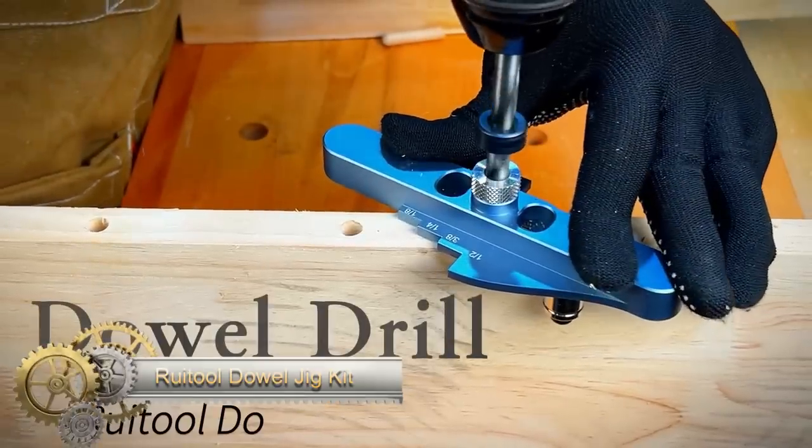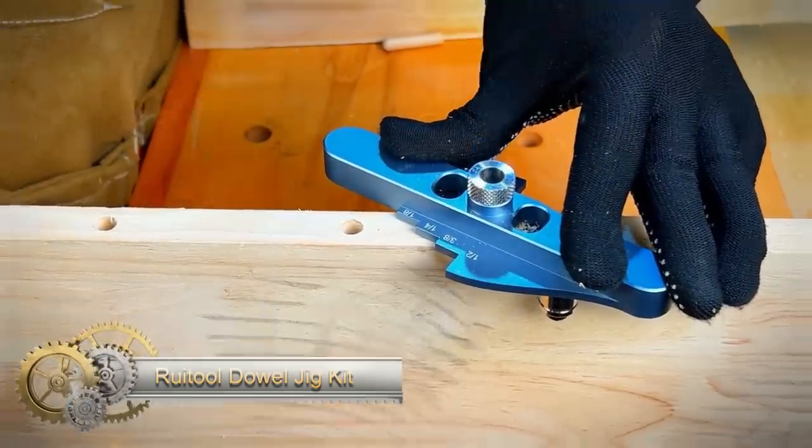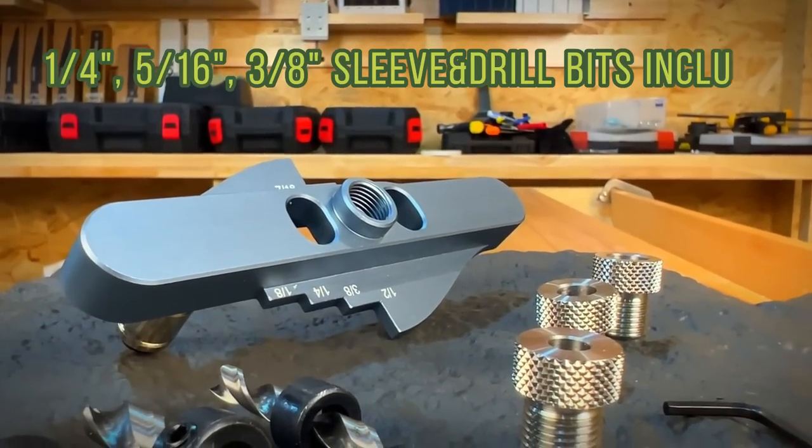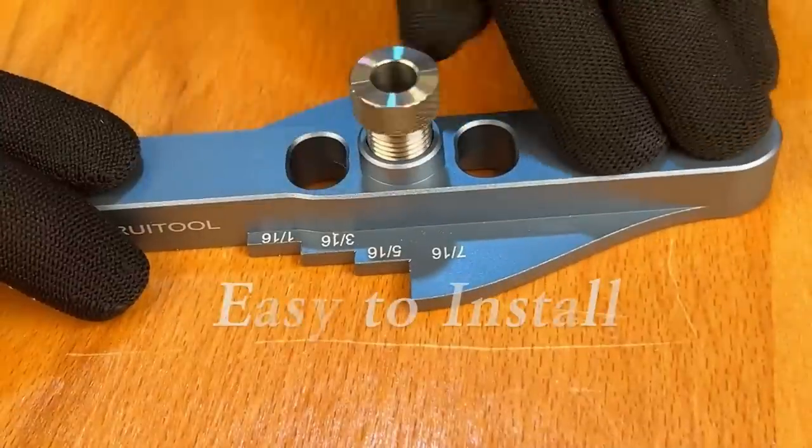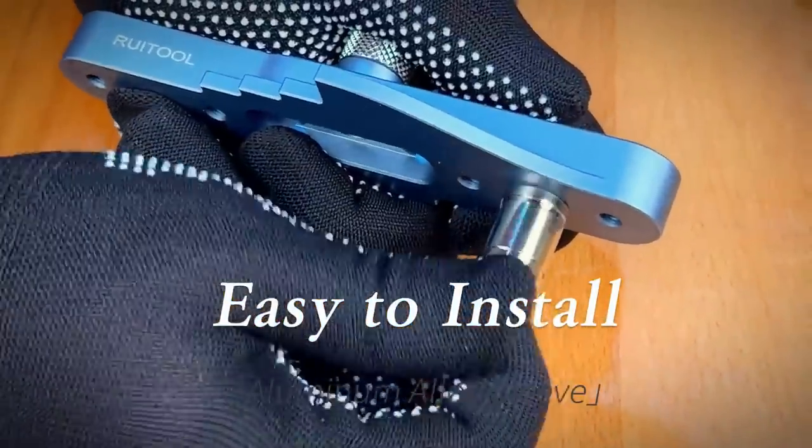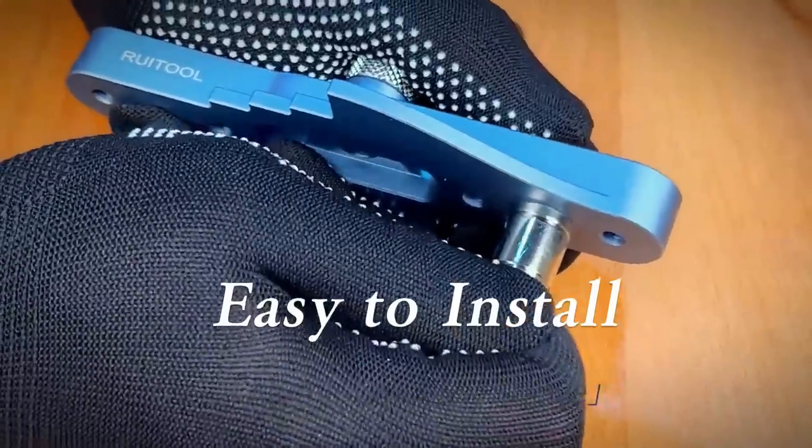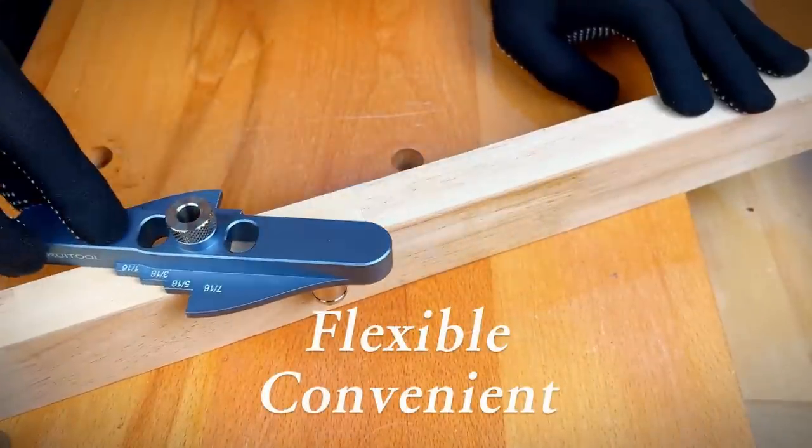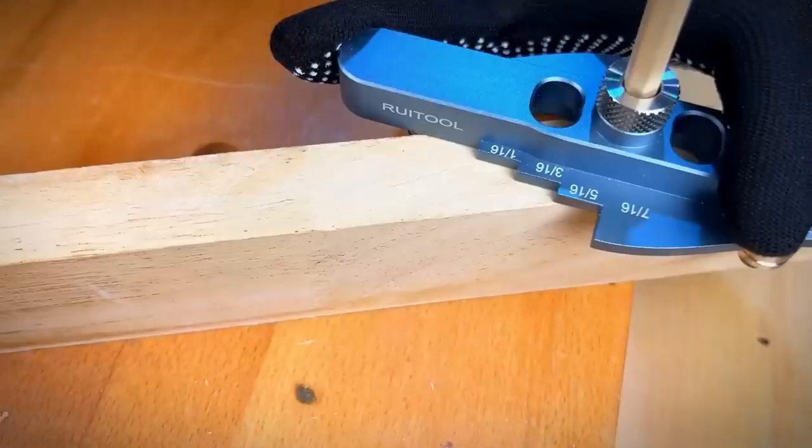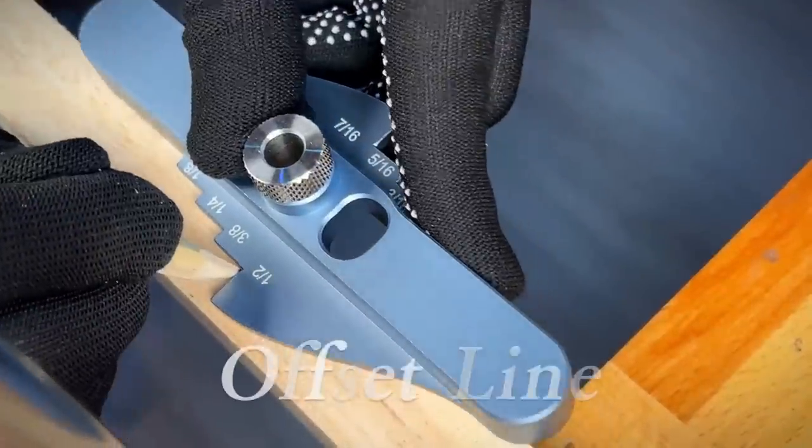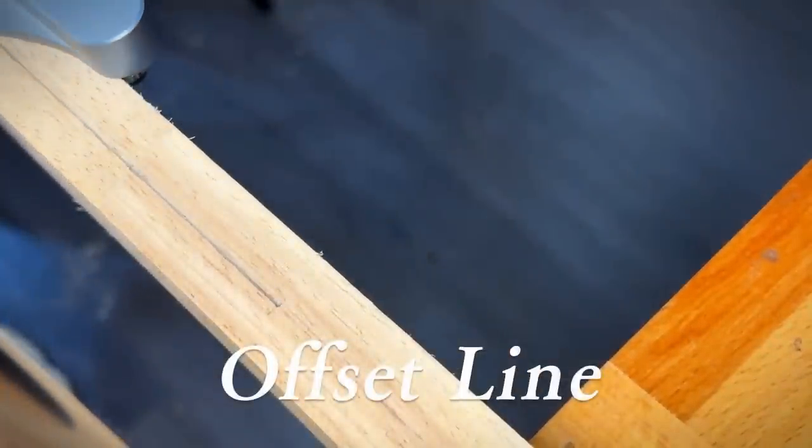The Rue Tool Dowel Jig Kit is a precise tool designed for accurate and repeatable dowel joints. Crafted from aluminum alloy, it offers durability and precision. Additional details include a self-centering line scriber and drill guides for 1/4-inch, 5/16-inch, and 3/8-inch dowels, along with corresponding drill depth stop collars. The kit includes various drill guides and drill depth stop collars, enabling dowel holes of different sizes and depths.